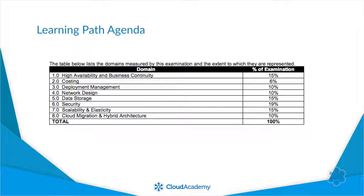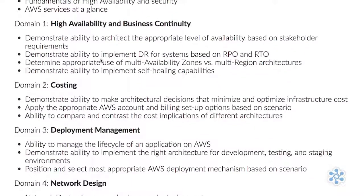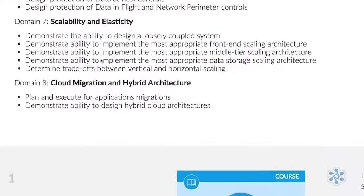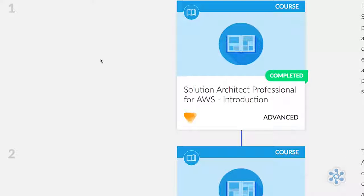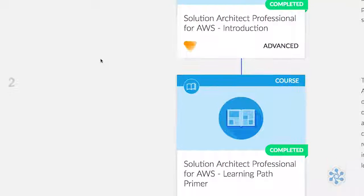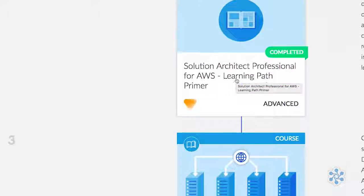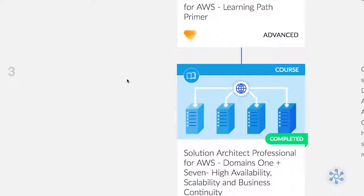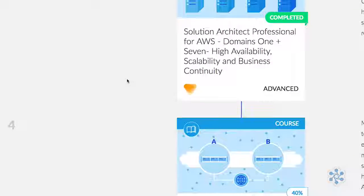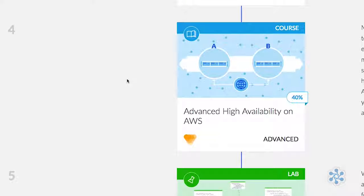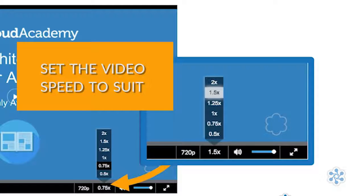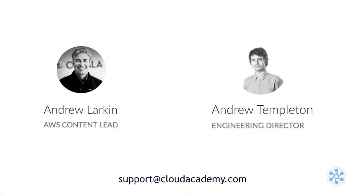Everyone has their preferred way of learning and there is no one way to study for this professional certification. We recommend you do all the courses, though you can pick and choose the order as you wish. I'd recommend running videos at 1.5 speed rather than skipping steps if you find yourself short of time. I've really enjoyed building this learning path and I hope you can build and develop your skills as an AWS professional. Remember you can set the speed of delivery using the player speed settings, and any questions you can reach us at support@cloudacademy.com.